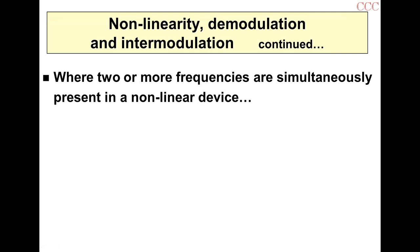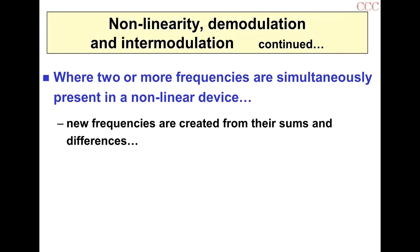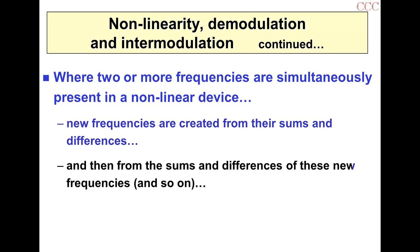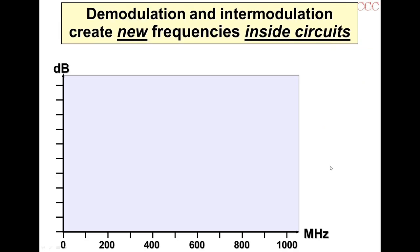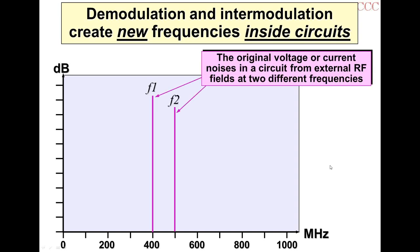When you have two or more frequencies simultaneously present in a nonlinear device, we get intermodulation — new frequencies created from the sums and differences of the input frequencies, and then from the sums and differences of those new frequencies. It gets very complicated with more than three frequencies. You can find intermodulation tables on the internet, since RF transmitting tower engineers have to worry about this. If you put an antenna up in any normal environment, you'll see dozens of frequencies: broadcast channels, private mobile, and all sorts.